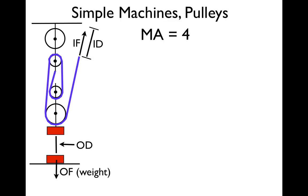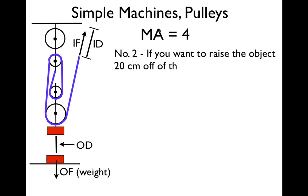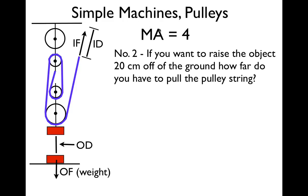The next problem: we know the MA is 4 from the previous slide. The problem says you want to raise an object 20 centimeters off the ground. How far do we have to pull the string? We want to raise the object 20 centimeters — that is the output distance. How far we pull the string is the input distance. So we're given the output distance of 20 centimeters and we want to figure out the input distance.